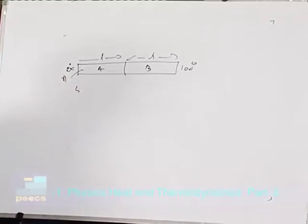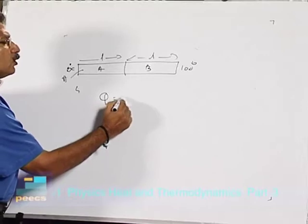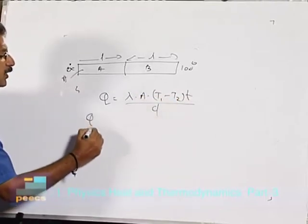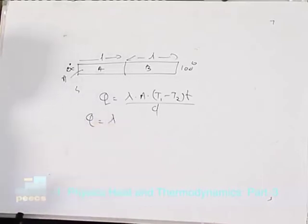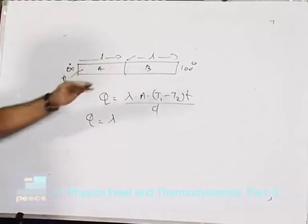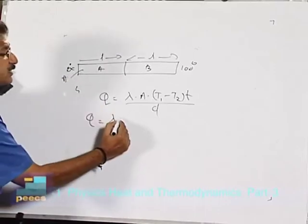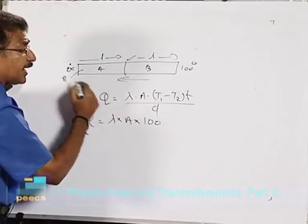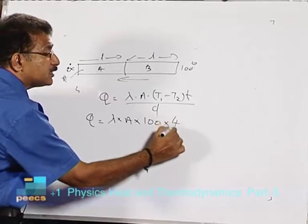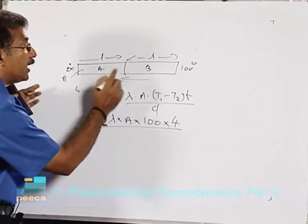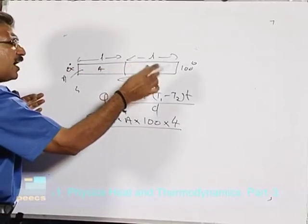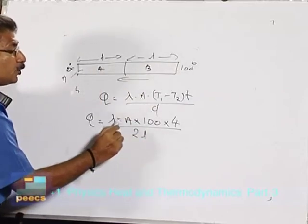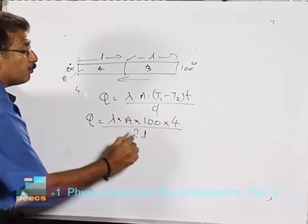If the same slabs are joined side by side (figure 2), in what time will the same quantity of heat flow? For figure 1: the two roads of length L each are in series, giving total length 2L and area A. So Q = λ·A·100·4 / 2L.